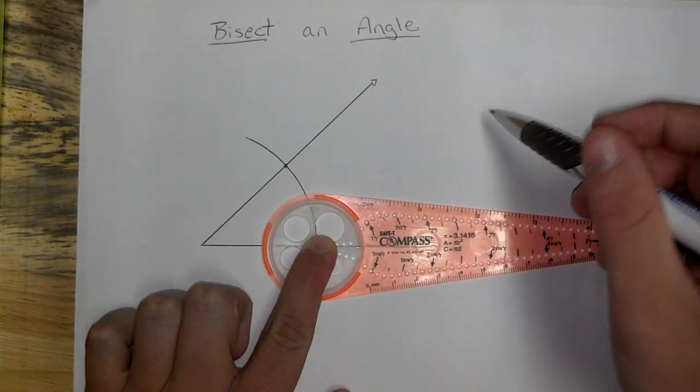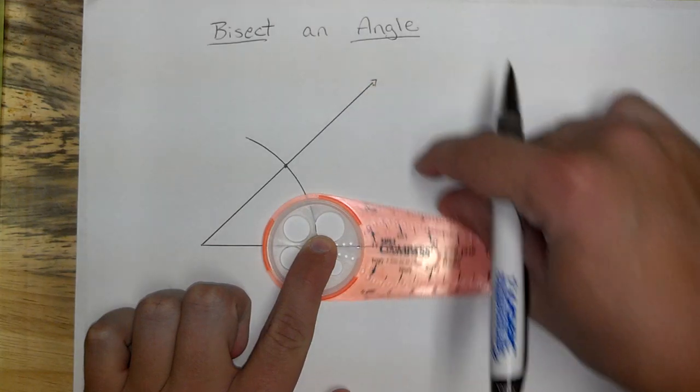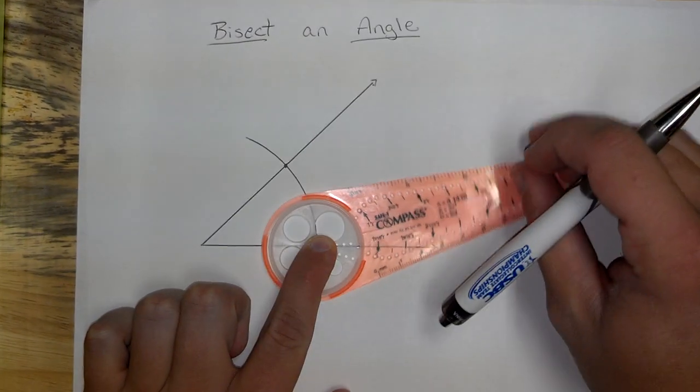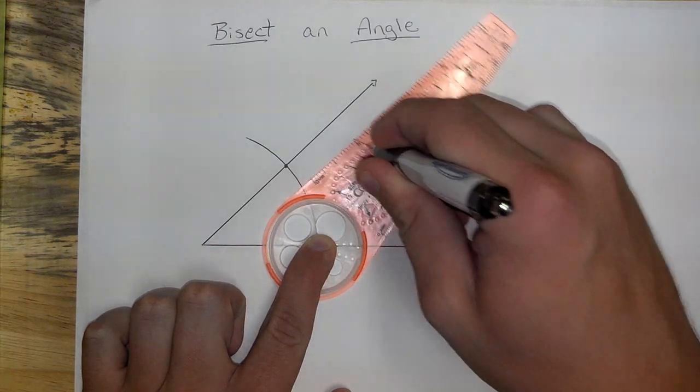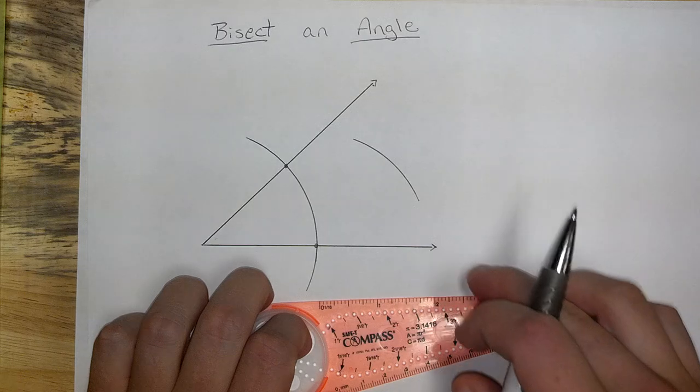Remember, a bisector chops it in half. Which means if you're not somewhere here in the middle where that line's going to be, you're not doing yourself any good. So I'm going to create a nice arc here. Obviously, out here in the middle.